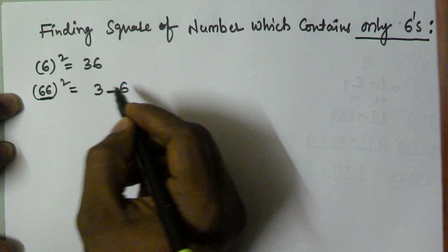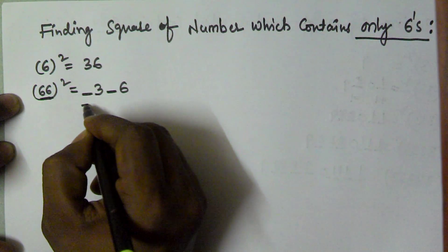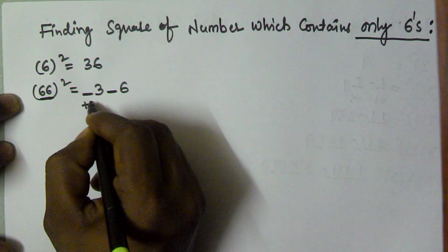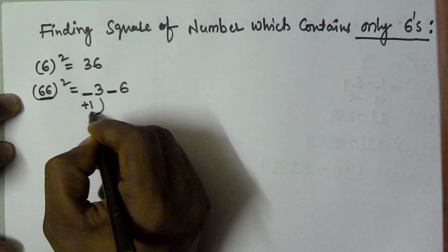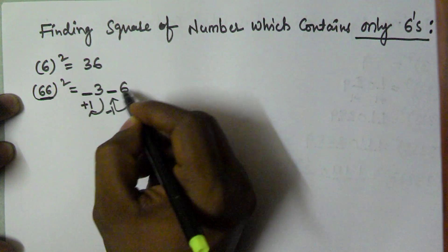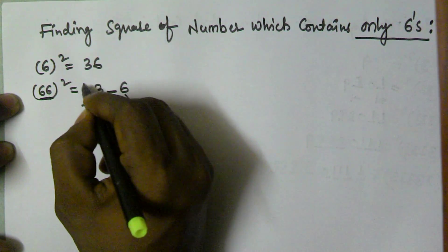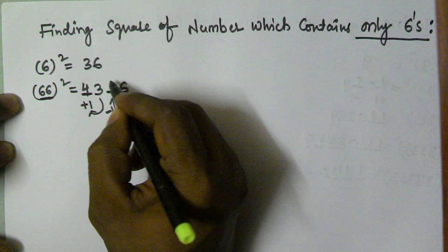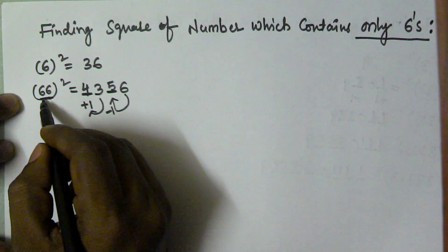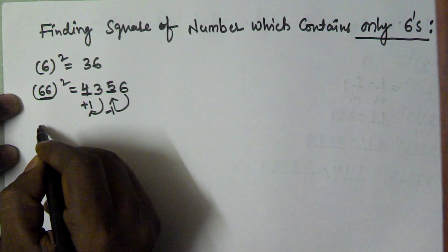Here we have to use plus 1 of this digit and here we have to fill with minus 1 of this value. So here 3 plus 1 is 4, 6 minus 1 is 5. So the value of 66 square is 4356.